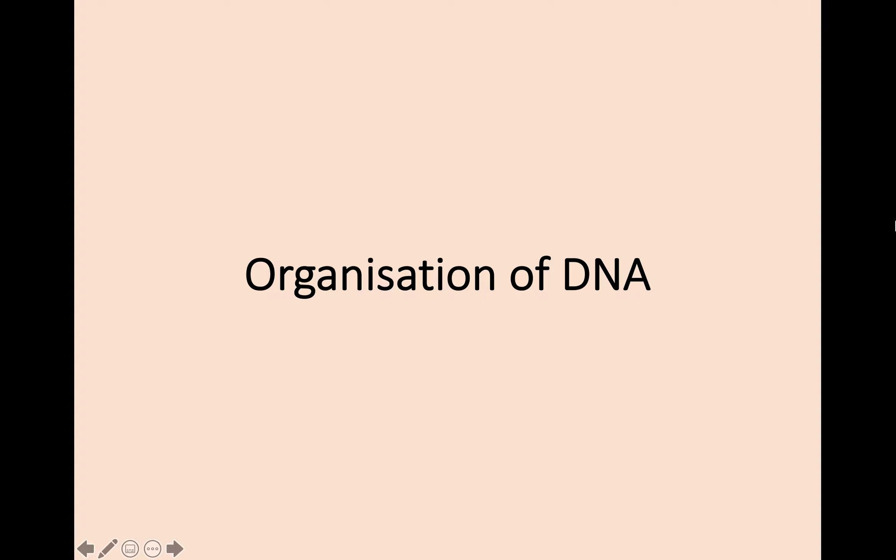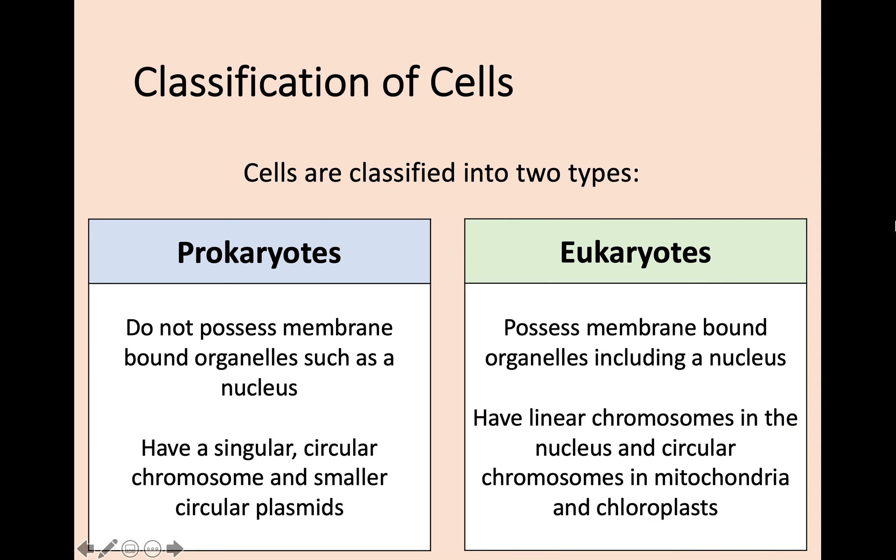The next part, we're going to zoom out a bit from the actual structure of DNA and look at the organization of DNA. Cells are classified into two different types. Before you start thinking about plant cells and animal cells, bacterial cells and all that, widely we refer to it as either prokaryotes or eukaryotes. Prokaryotes do not have any membrane-bound organelles such as a nucleus. What they do have is a singular circular chromosome and smaller circular plasmids.